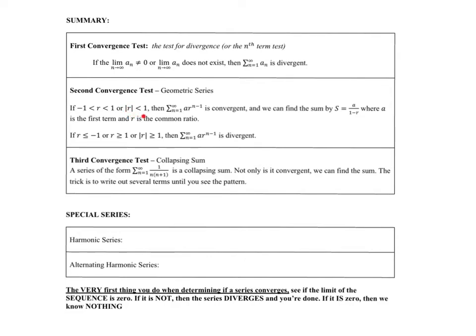The absolute value of R must be less than one for it to converge — in other words, between negative one and one. The sum formula is a divided by one minus R, where R is the common ratio. If R is less than or equal to negative one or greater than or equal to positive one, the geometric series is divergent. Make sure you do not jump to the sum formula before checking convergence — first consider does it converge; if yes, then find the sum; if not, it's divergent and you're done.